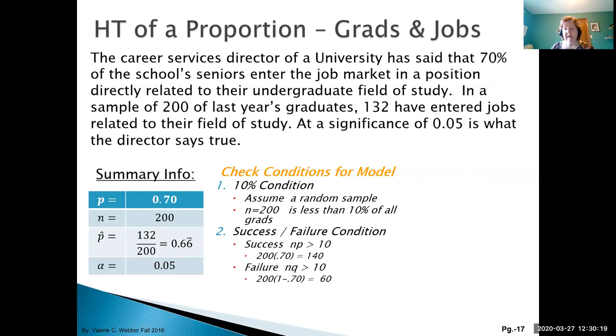Let's move on to the hypotheses. Our null and alternative are: the current population proportion for those who get a job in their field of study is currently 70%, and the alternative is that it's not equal to 70%.